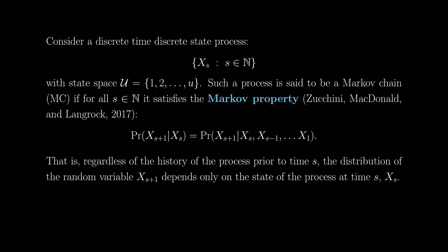So that is the distribution of the random variable x sub s plus one depends only on the state of the process at time s, so x sub s, regardless of what its history was prior to time s. Another way to articulate this would be to say that the future depends on the past only through the present. So that's another phrase I've borrowed from a book.